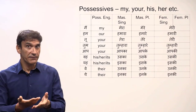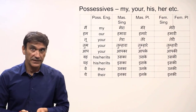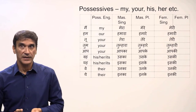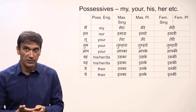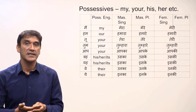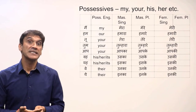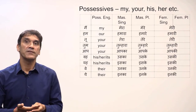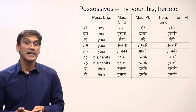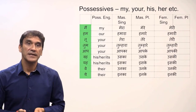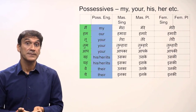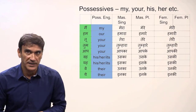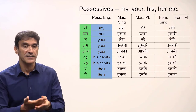Possessives in Hindi behave like a variable adjective. That means they change according to number and gender. Every possessive has a masculine singular form and a masculine plural form. The feminine singular and plural forms are the same. Here you have the table of possessives in Hindi. The first column has subject pronouns and the second column has possessive pronouns in English corresponding to the subject pronoun in the first column.